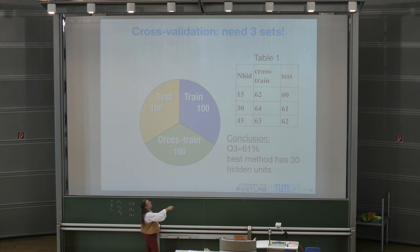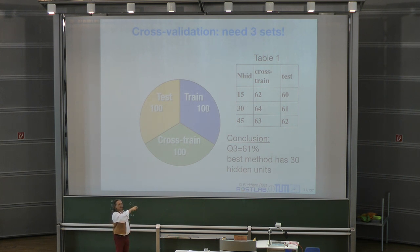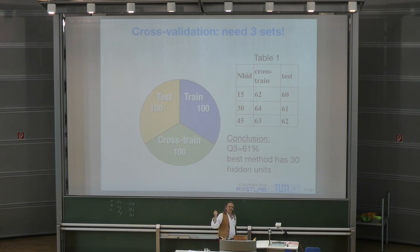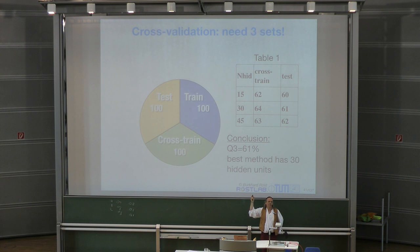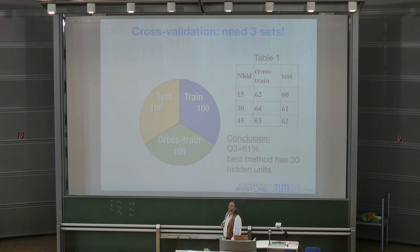If I had a situation like that, I would immediately realize something went wrong, but I don't know how to correct it. Every optimization has to be done on the cross-training set — I cannot look at the test set and optimize. I can find out something is wrong, but I cannot correct it without using the test set for training, which I cannot do. The fact that cross-training gives a different optimal situation than testing suggests there's a problem, and we cannot fix it.